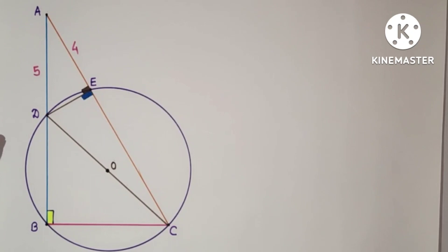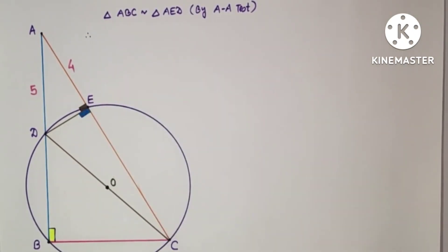Triangle AED and triangle ABC will be similar triangles because A is common in both triangles, and this angle is 90 and this angle is 90. So for similar triangles, corresponding sides are proportional.